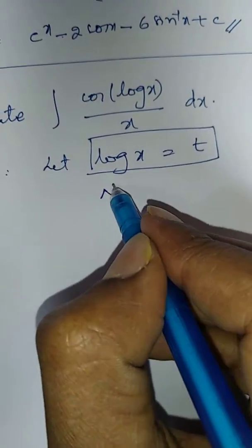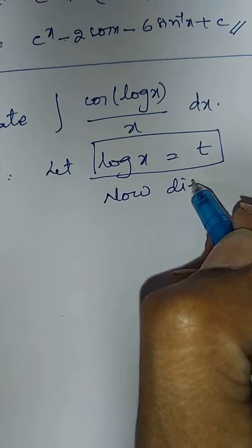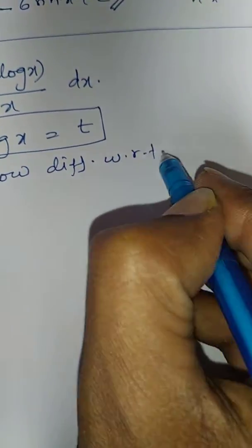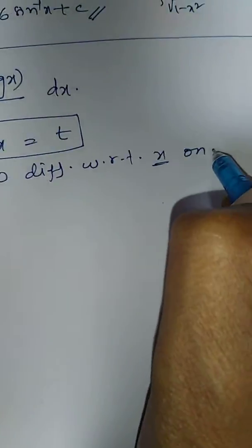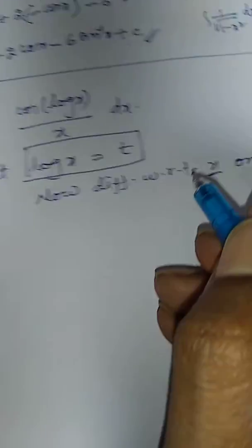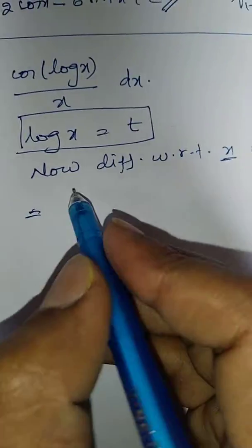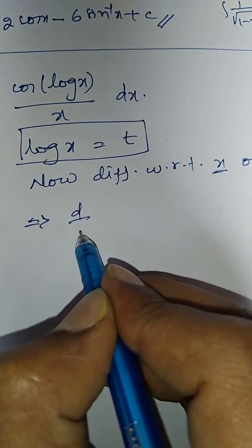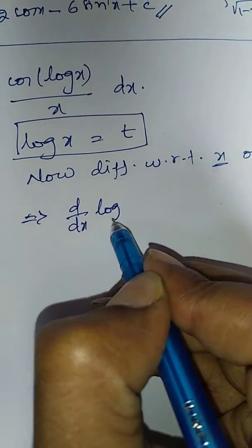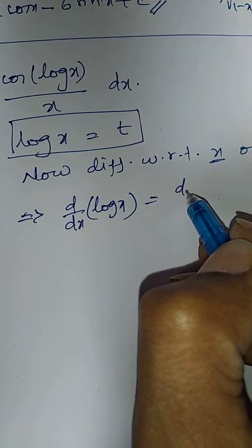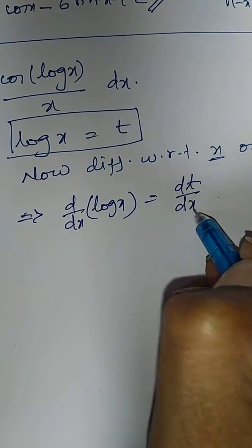Now differentiate with respect to x on both sides. That is equal to d by dx of log x is equal to dt by dx.